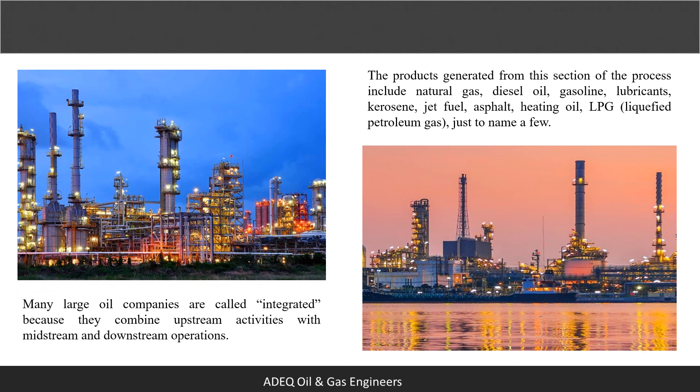The products generated from the downstream section of the process include natural gas, diesel oil, gasoline, lubricants, kerosene, jet fuel, asphalt, heating oil, and LPG, just to name a few. While each area is different, each plays a critical role in the overall process. Together, all three areas help to power the world.